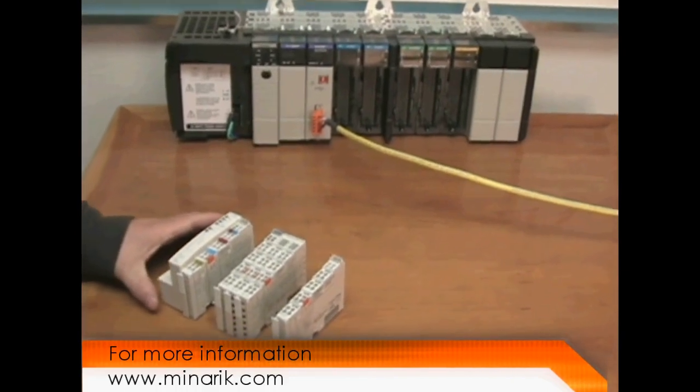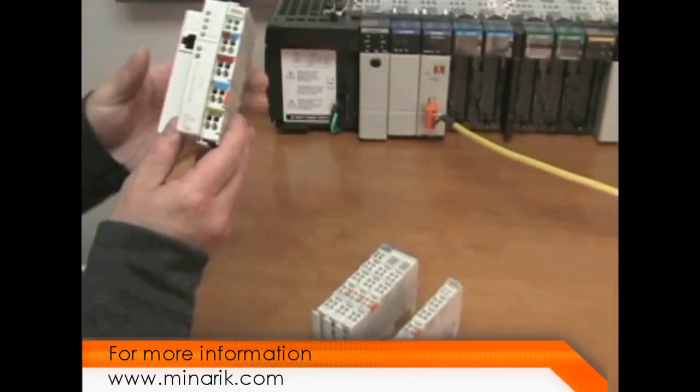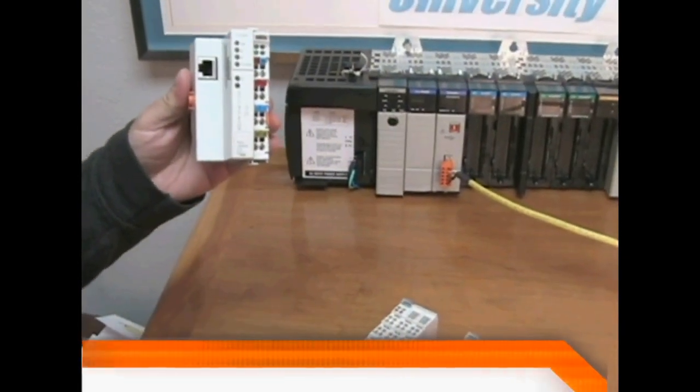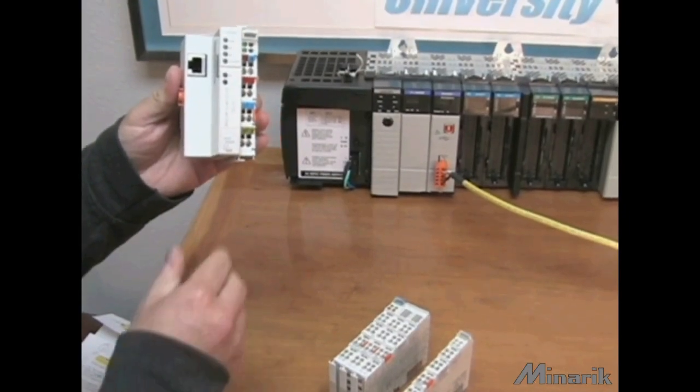In this case, we'll use WAGO hardware. The nodes are built of three different parts. First, you have a Fieldbus coupler, which is specific to the kind of network and protocol that you've chosen.